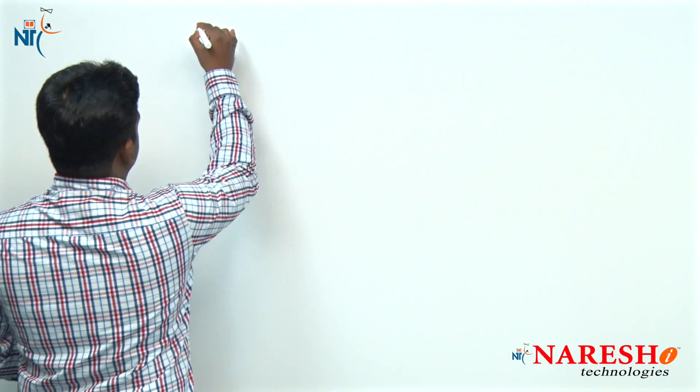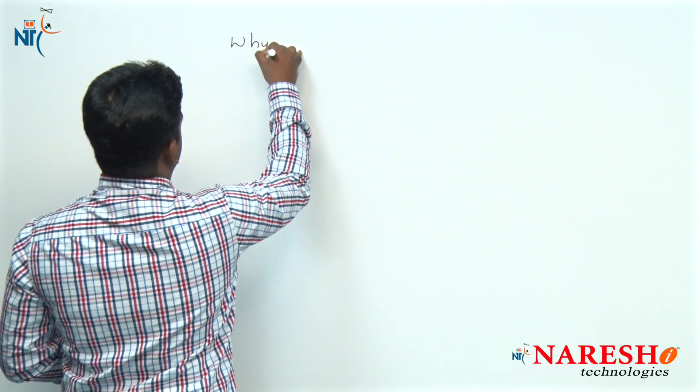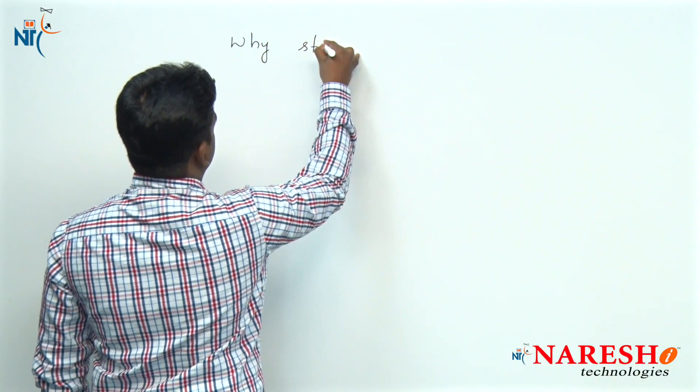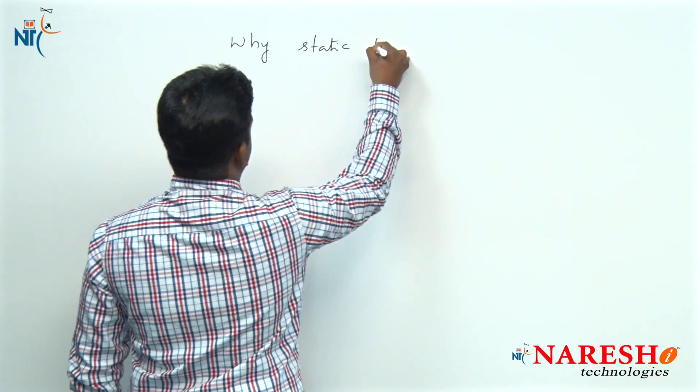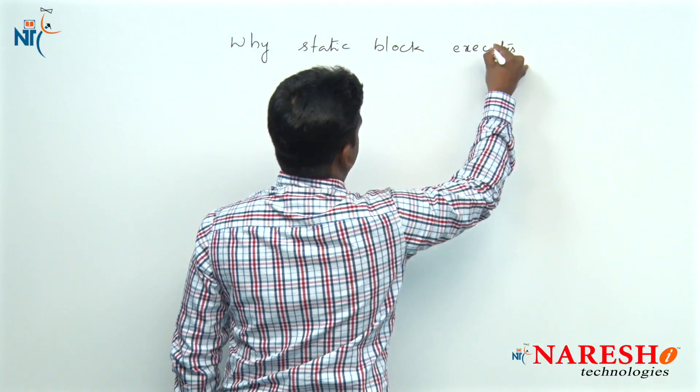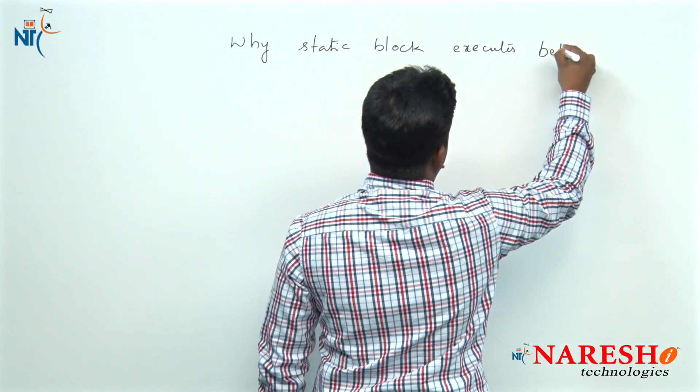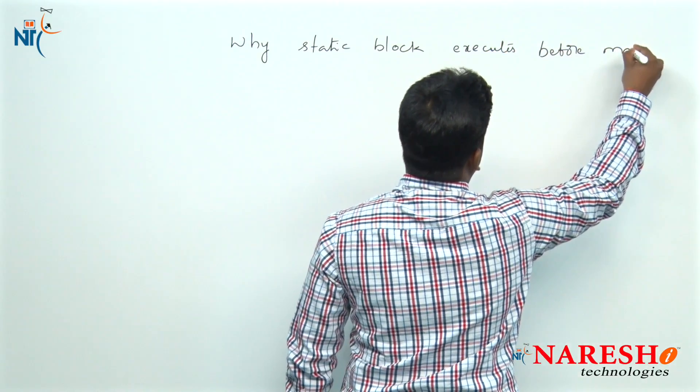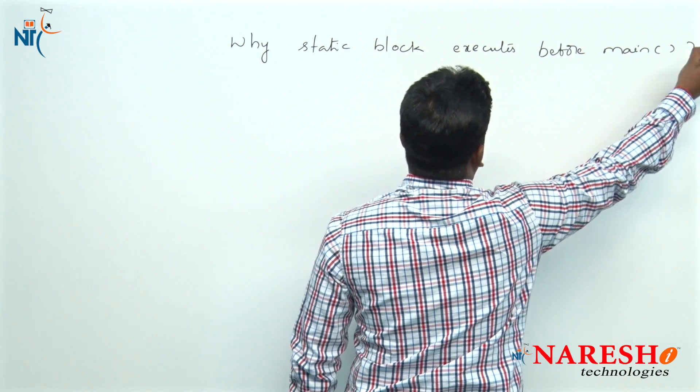But in Java, some things are executing before the main method. What are those things? Mainly, the static block is executing. So the question is: why does the static block execute before the main method?